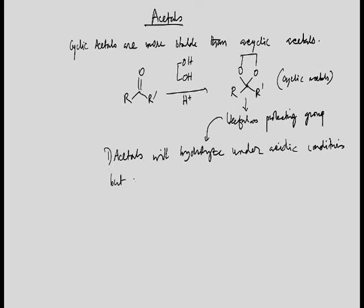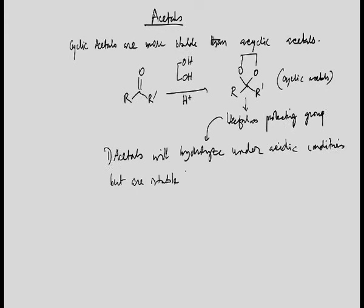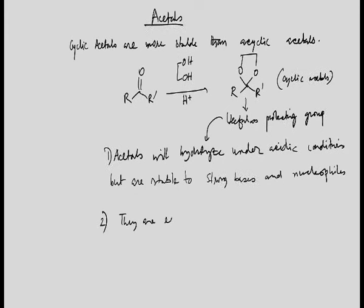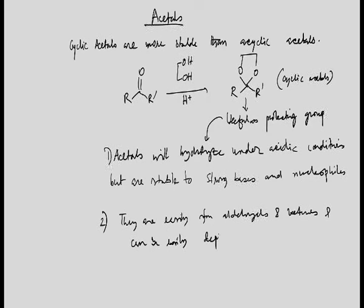Why are cyclic acetals useful protecting groups? Cyclic acetals are stable to strong bases and nucleophiles. They are easily formed from aldehydes and ketones, and they are easily hydrolyzed, so they can be easily deprotected. These properties make them an ideal protecting group.